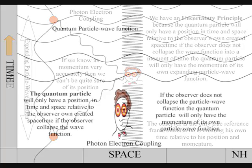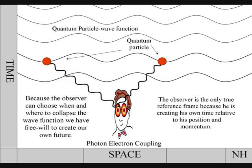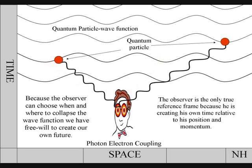This is because, to observe the quantum particle, we create a photon-electron coupling, collapsing the particle wave function into a moment of time and space that is part of the observer's own created space-time.